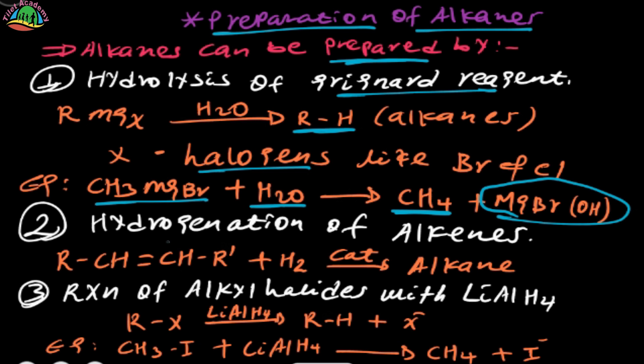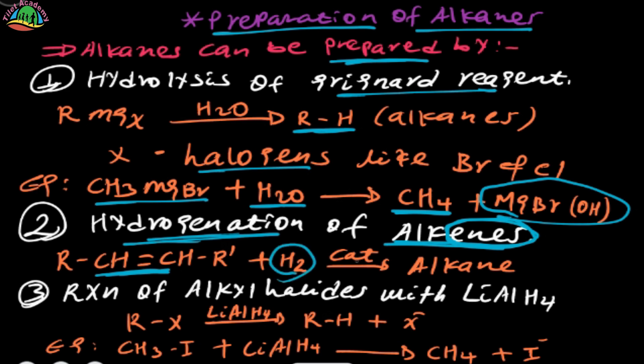The second method of preparation of alkenes is hydrogenation of an alkyne. The product is formed from the hydrogen and the metal group of magnesium bromide, and it contains a double bond.